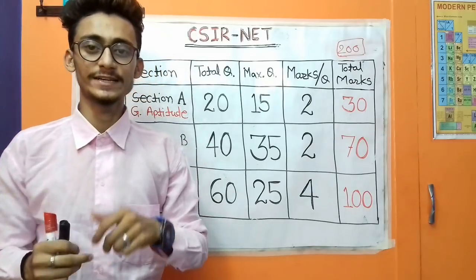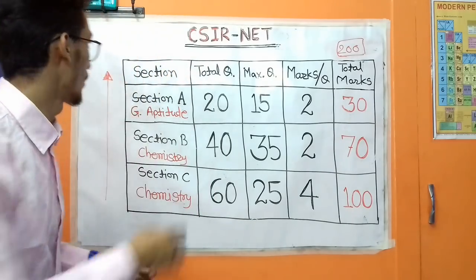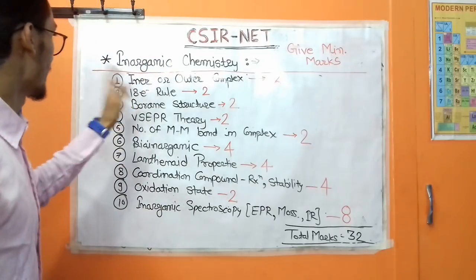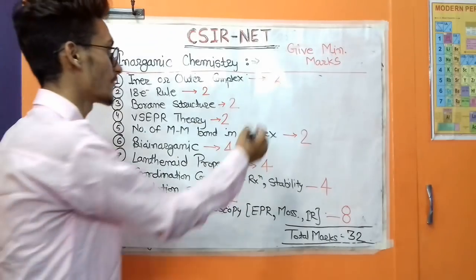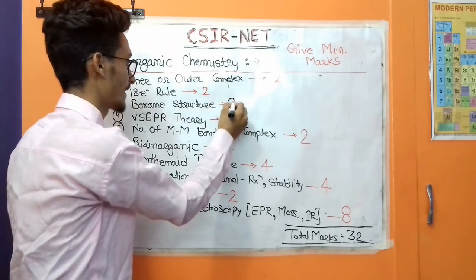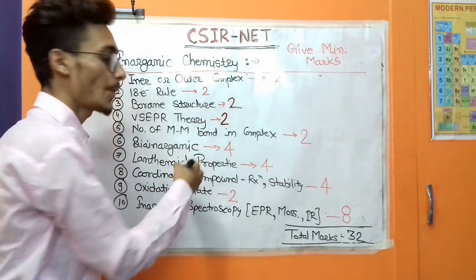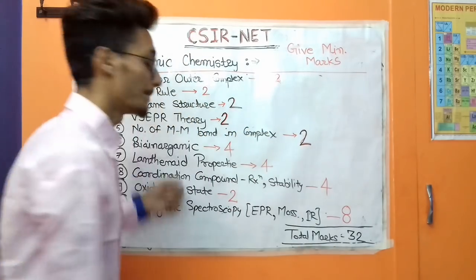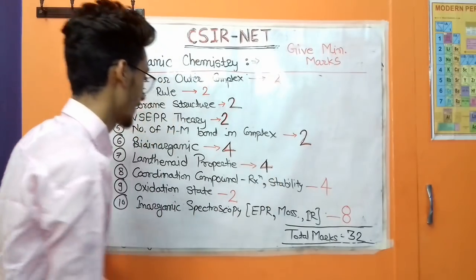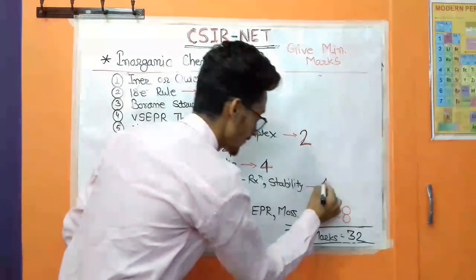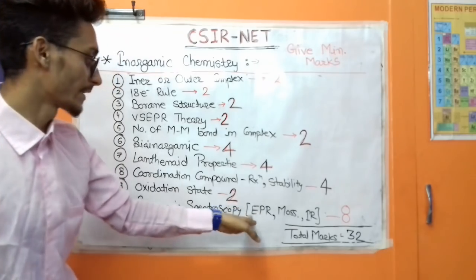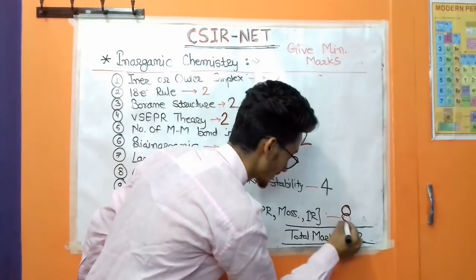Now let's discuss some important chemistry topics that most probably come in the CSIR NET exam. Starting with inorganic chemistry: the first topic is inner/outer complex, which gives approximately 2 marks. The 18-electron rule gives 2 marks. VSEPR theory gives 2 marks. Metal-metal bonding in complexes gives 2 marks. Bio-inorganic gives 4 marks. Lanthanide properties give 4 marks. Coordination compound reactions and instability give 4 marks. Oxidation state gives 2 marks. And inorganic spectroscopy — EPR, Mössbauer, and IR — gives 8 marks.